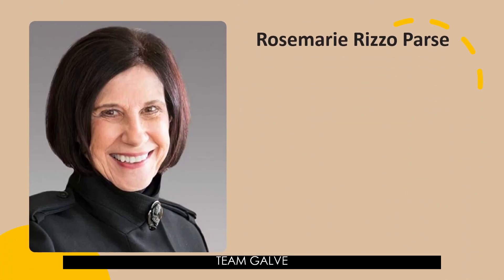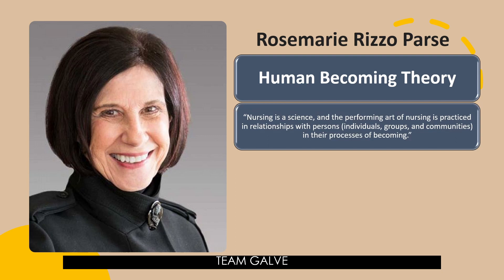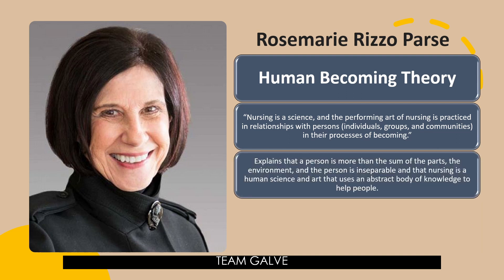Next, we have Rosemary Rizzo Parse, who proposed the Human Becoming Theory. According to her, nursing is a science and the performing art of nursing is practiced in relationships with persons — individuals, groups, and communities — in their processes of becoming. This theory explains that a person is more than the sum of the parts, the environment and the person are inseparable, and that nursing is a human science and art that uses an abstract body of knowledge to help people.